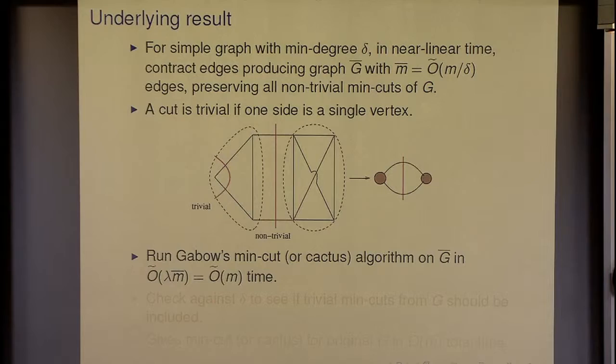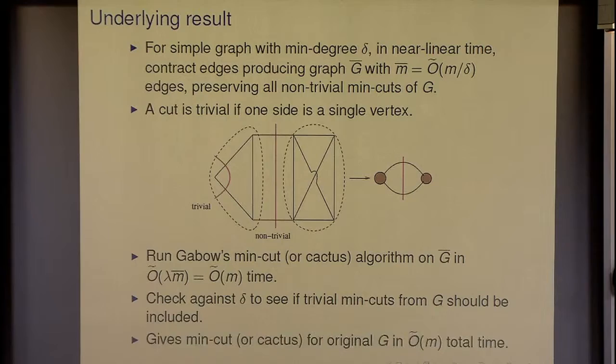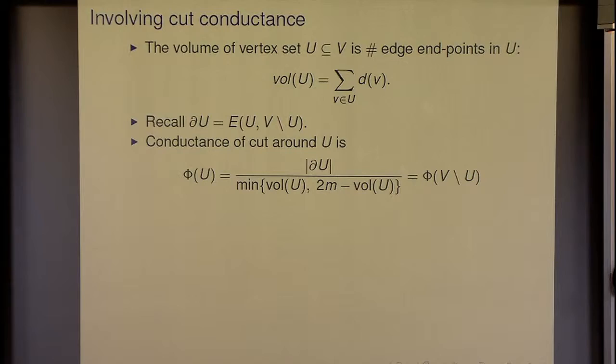Once we have this contraction result, we can run Garbo's min-cut or cactus algorithm on the contracted graph. It runs in lambda·m time, and because m is so much smaller, it becomes linear. All we have to do at the end is check against delta to see if some trivial min-cuts are actually small or should be included. Then we get everything in near-linear time.